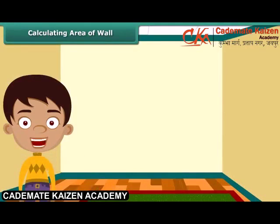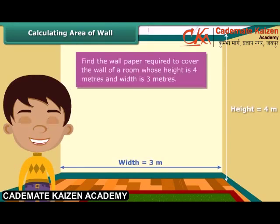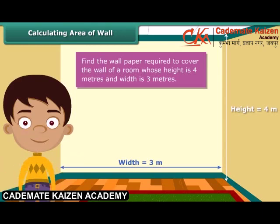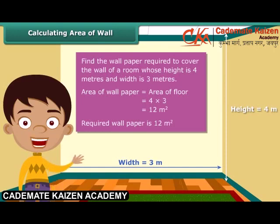Now that we know how to calculate area, let us solve a question based on the concept. Each wall of Nidhi's room is 4 meters high and 3 meters wide. She wants to cover one of the walls with wallpaper and needs to know how many square meters of wallpaper will be required. The area of the wallpaper required will be the same as the area of the wall. The area of the wall is 4 meters multiplied by 3 meters, which is 12 square meters. So, 12 square meters of wallpaper will be required.